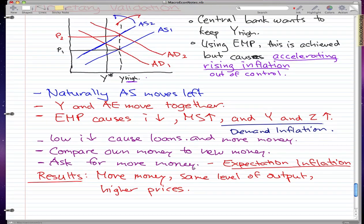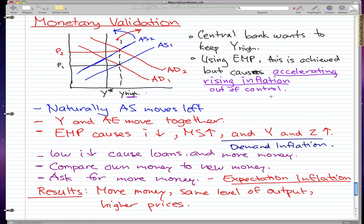And this is what causes accelerating rising inflation. It goes out of control. Prices will keep on rising until something else happens that stops this, like the central bank's decision to actually let it go back to equilibrium would stop it. But if central bank wants to keep it at Y high, prices will keep on going up forever and probably have hyperinflation or something. This is what I want to teach you in this video. Please rate, comment, and subscribe. Thanks for watching and I'll see you.